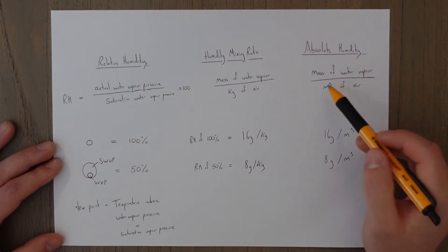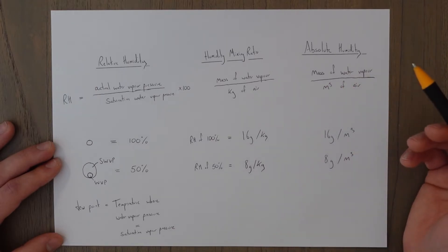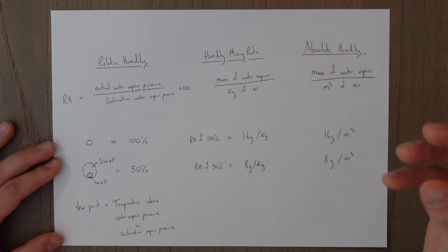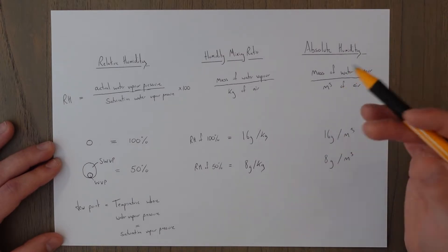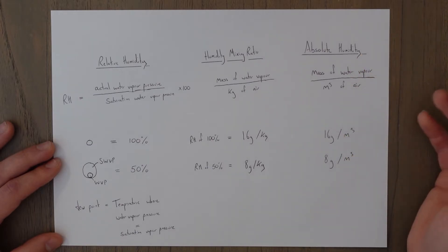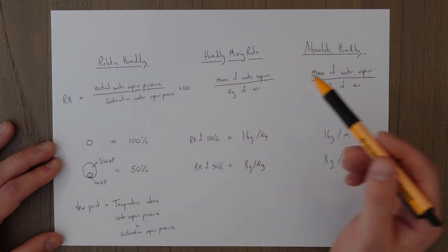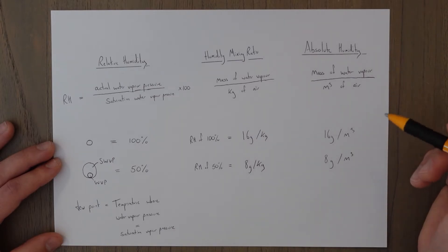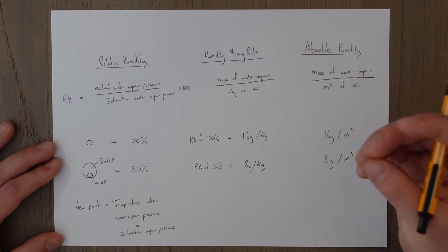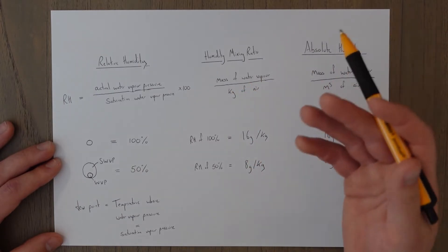Absolute humidity is the mass of the water vapor compared to the volume of air — it's like the water density in the air, and it will vary a lot with geography. Somewhere close to the sea is bound to have more water in the air per cubic meter than in the desert, for example. So whereas relative humidity is the level of saturation in the air, absolute humidity is a quantifiable amount: the mass of water per volume. Similarly, the humidity mixing ratio is mass per kilogram.